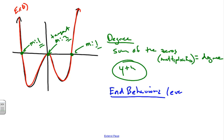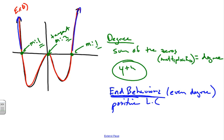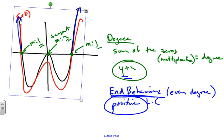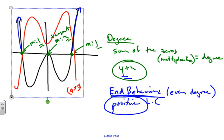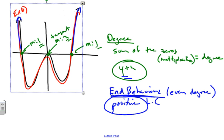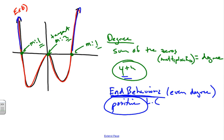For an even degree with a positive leading coefficient, both ends rise. So to the right it rises, and to the left it also rises. Looking at the end behaviors and knowing it's a fourth degree, this has a positive leading coefficient. If it were negative, the polynomial would be reflected and would go down on both ends. But it is not — it rises on both sides — so this is a fourth degree with a positive leading coefficient.